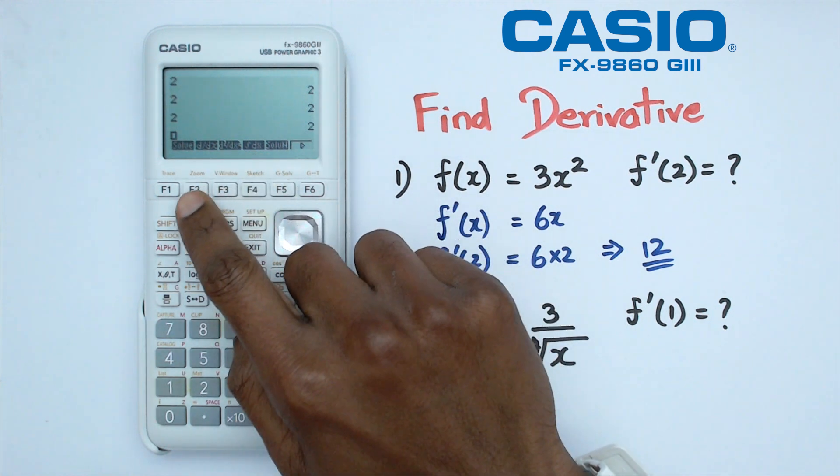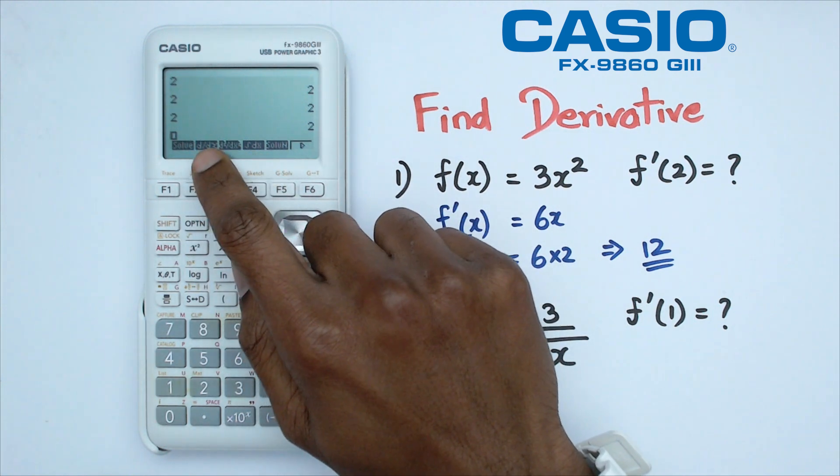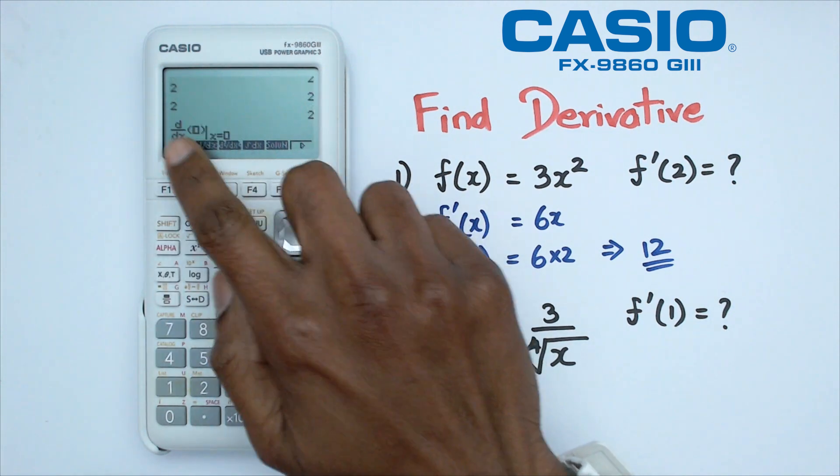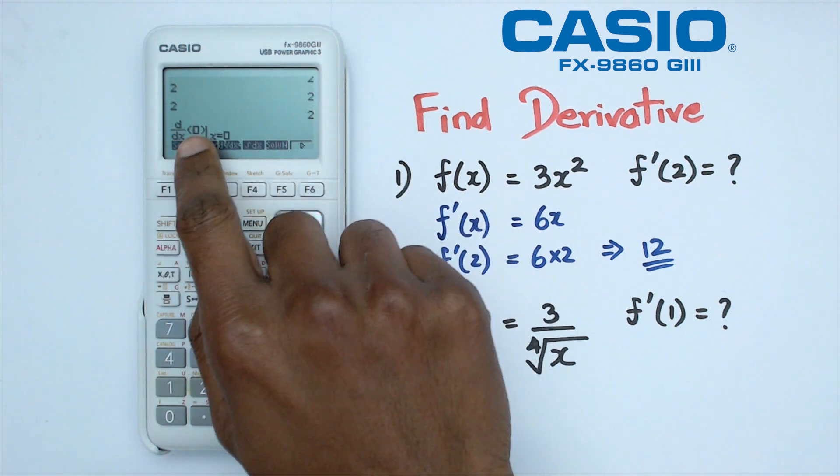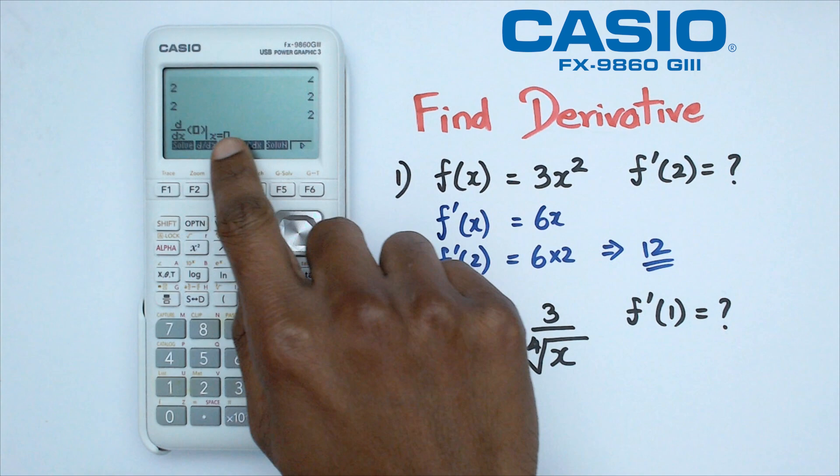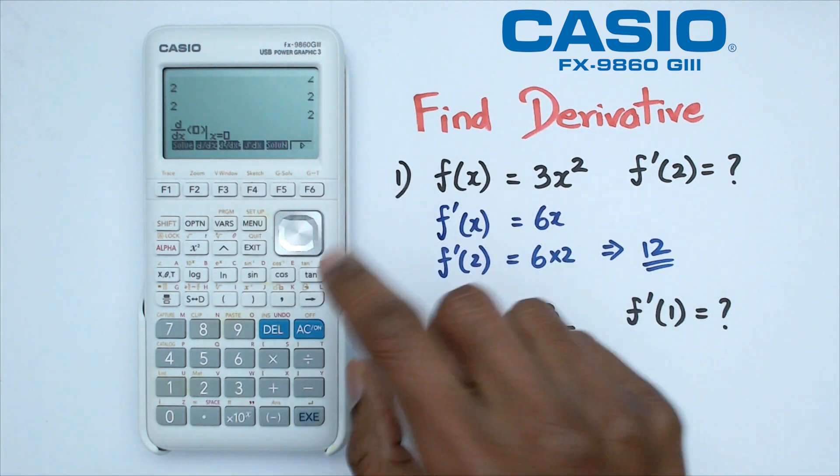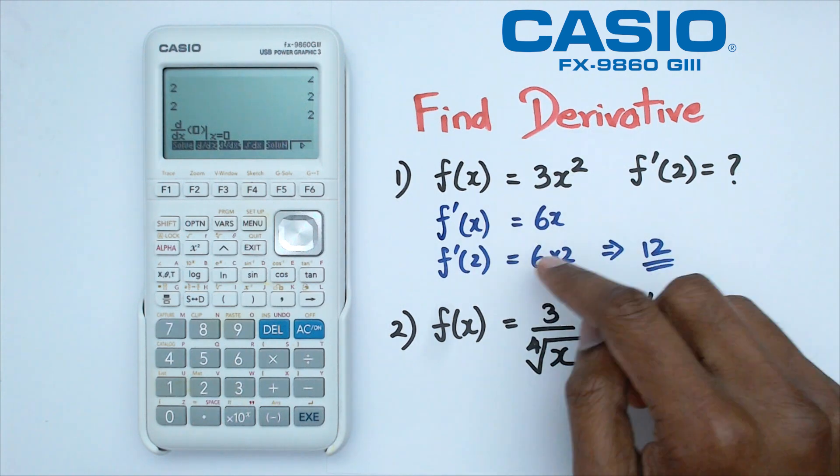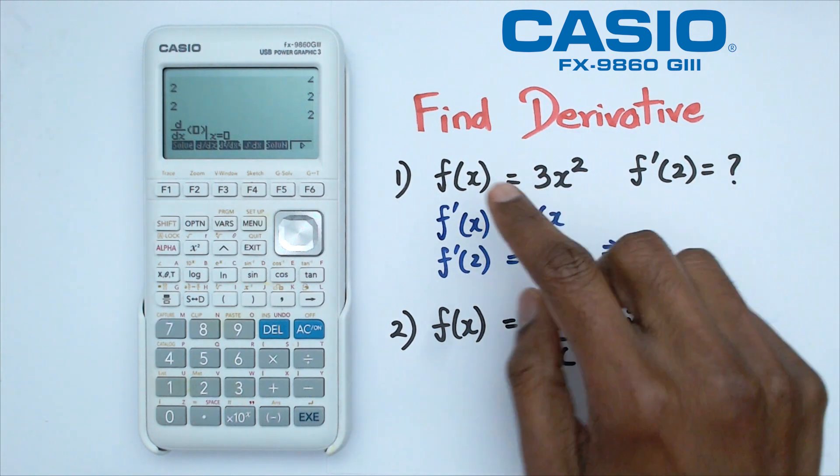The next thing we're going to do is we're going to click on F2, which shows the d/dx. So when we click on this, what this is giving us is that it's telling us put the function here and then put the x value and it's going to give out what f dash of that particular x value is going to be. Now we've already done this here as 3x² is our function.